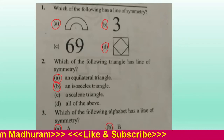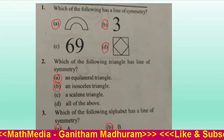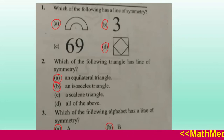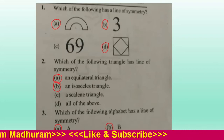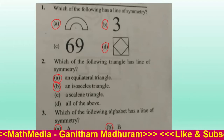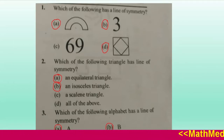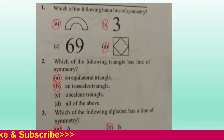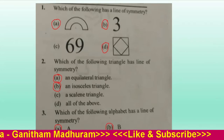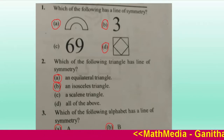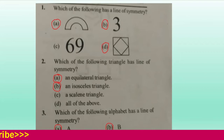Question number 3: Which of the following alphabets has a line of symmetry? Option A — 'A' has a line of symmetry. Option B — 'B' has a line of symmetry. Option C — 'Q' doesn't have a line of symmetry. Option D — 'O' is having a line of symmetry. So the correct options are A, B, and D.